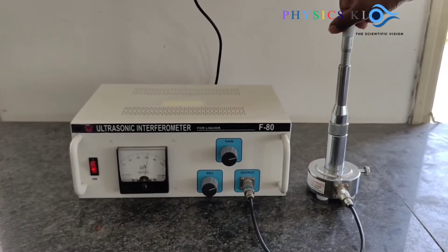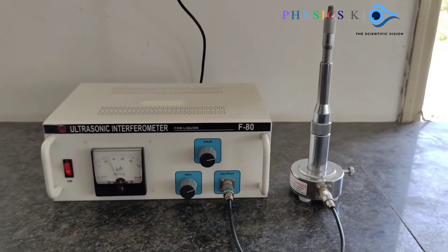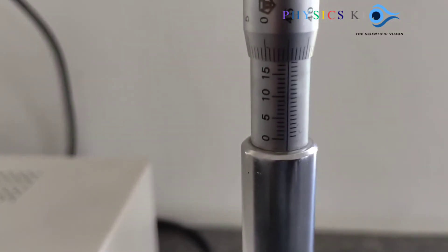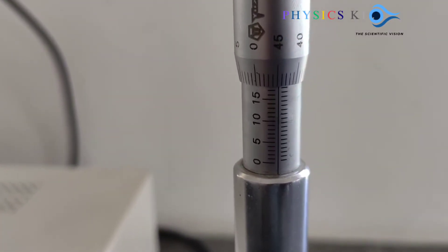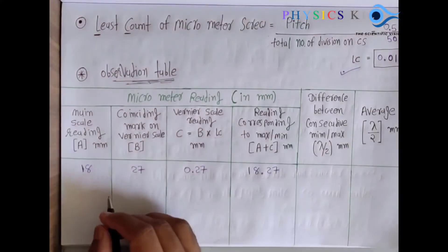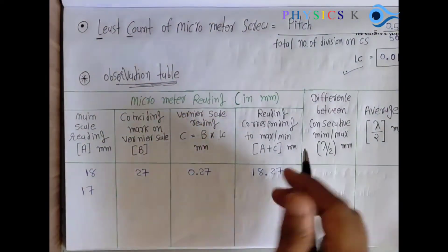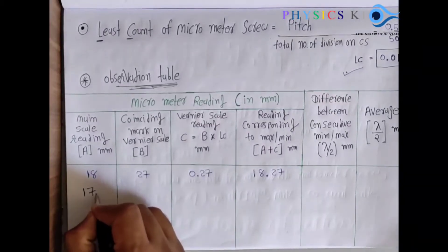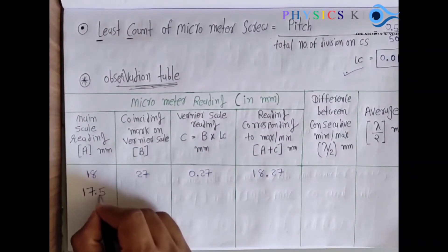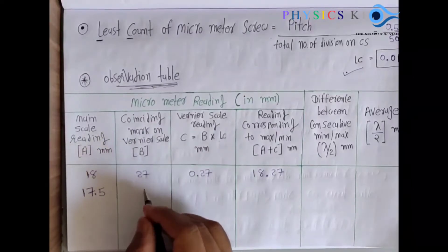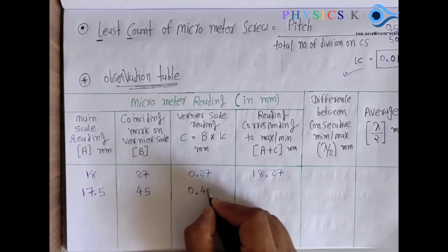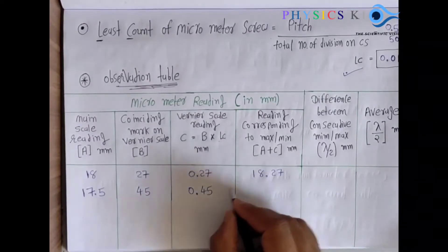The needle goes to the right side and comes back to the same position. Check the value: the main scale reads 17.5 mm. The coinciding vernier mark is 45. Multiply with LC: 45 × 0.01 = 0.45 mm. Add: 17.5 + 0.45 = 17.95 mm.